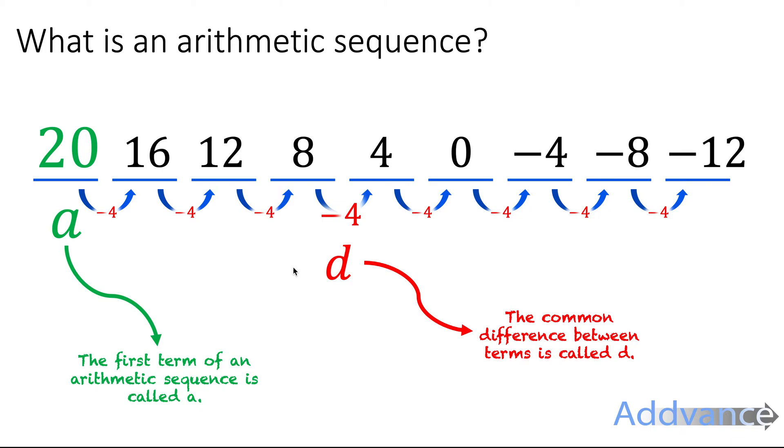I've got another sequence here: 20, 16, 12, 8, etc. We start with 20, so A is equal to 20, and the difference is minus 4. It's going down by 4 each time.